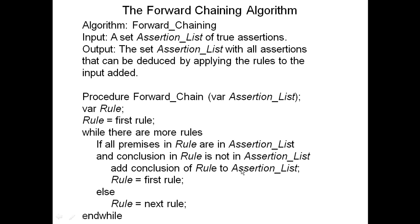So if you find everything is true, you add the conclusion and then go back to the first rule. Why go back to the first rule when you add a conclusion? Because the rules are not sorted in any particular way, so a rule you've already passed might now have all its premises true and you need to check it again. If all premises in the current rule are not true, you just proceed to the next rule. You cycle through the rules in this manner. Whenever you find a rule whose premises are all true, you add its conclusion and go back to rule one. Eventually you'll reach the end of the rules, and the algorithm exits.